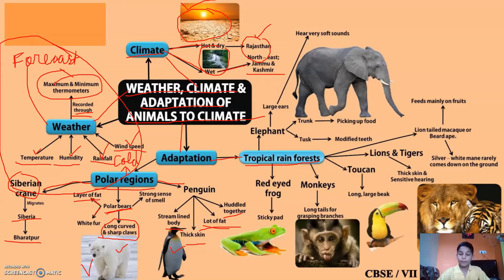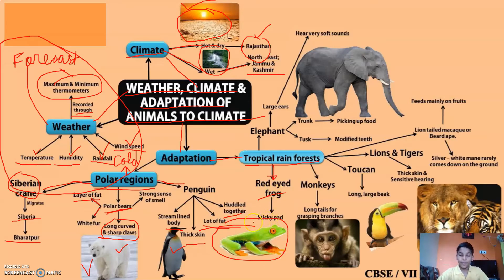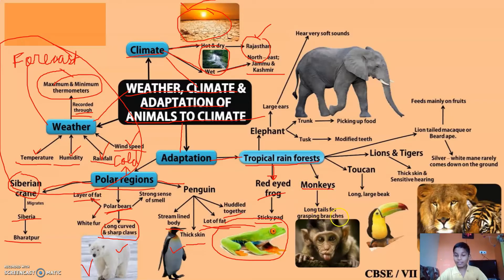In tropical rainforest, one example is the red-eyed frog. Its adaptation is that it has very sticky pads on its feet. Another example from the rainforest is monkeys — they have long tails for grasping branches and can climb very easily on trees.